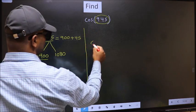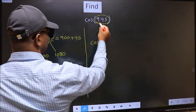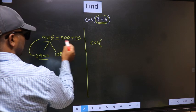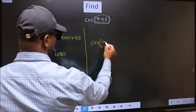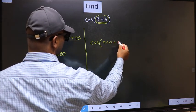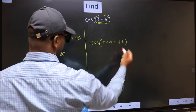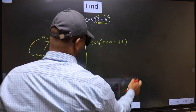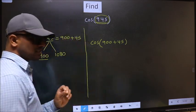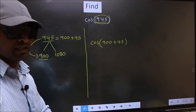So this will become cos(900 + 45). In place of this, now we write 900 plus 45. This is your step one.